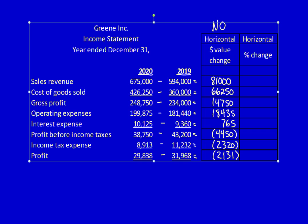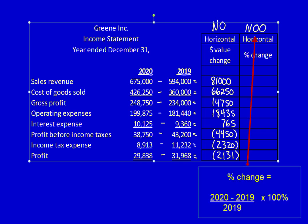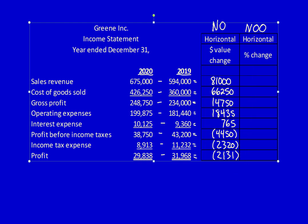Now we apply the NOO formula to calculate the horizontal percentage change — new minus old, divided by old, multiplied by 100%. For sales revenue: $81,000 divided by $594,000 equals 14%. Cost of goods sold: $66,250 divided by $360,000 equals 18%. Gross profit: $14,750 divided by $234,000 equals 6%. Operating expenses: 10%. Interest expense: 8%. Profit before income tax: negative 10%. Income tax expense: negative 21%.